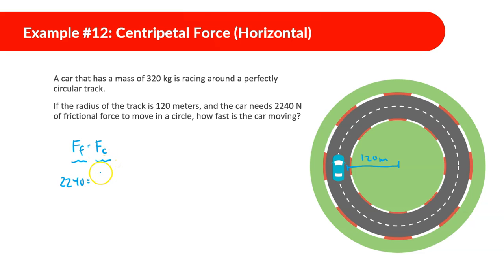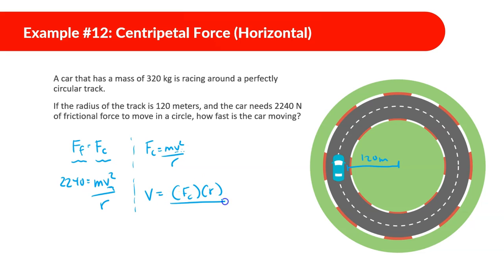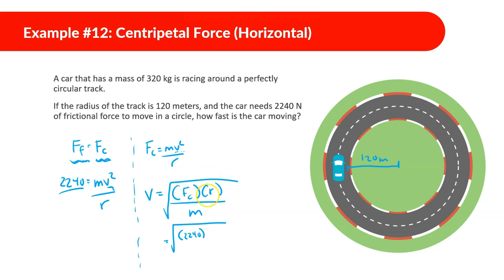We know the centripetal force formula is mv² over r, and we're solving for v. Rearranging: v equals the square root of (F_centripetal × r) divided by m. Substituting the friction force: v equals the square root of (2240 × 120) divided by 320. Calculating: 2240 times 120 divided by 320, then taking the square root, gives us 28.98 meters per second.